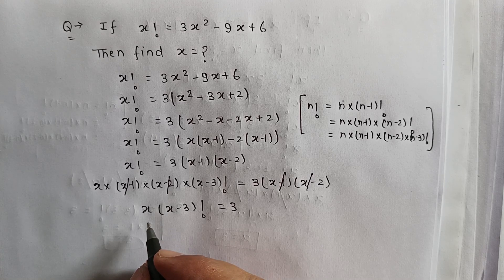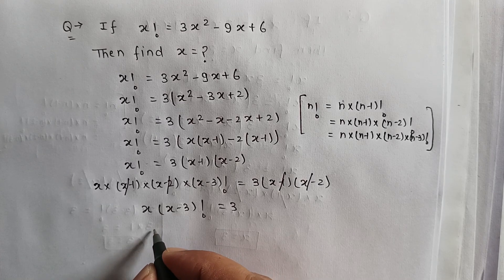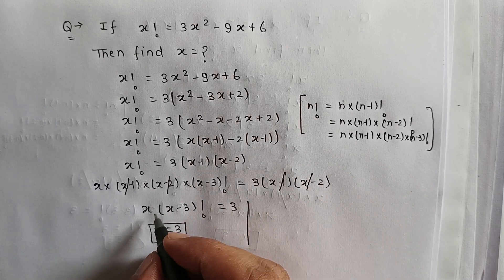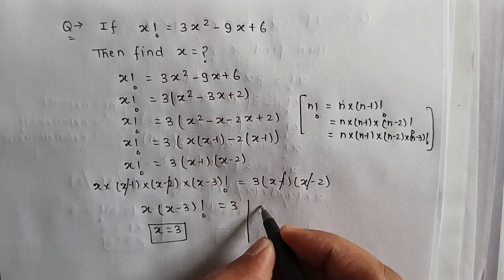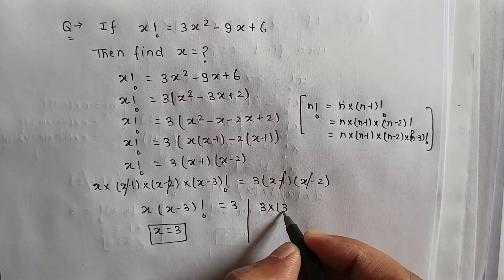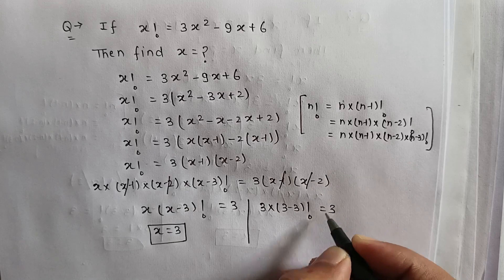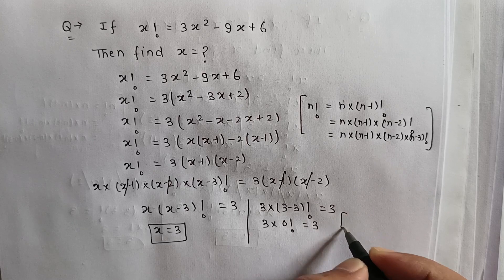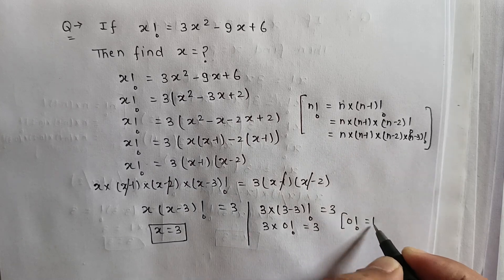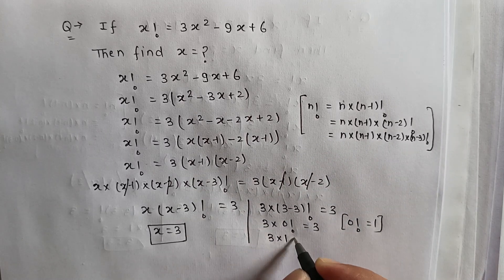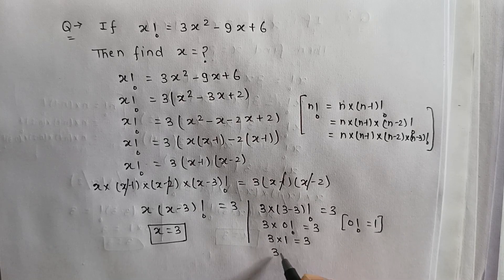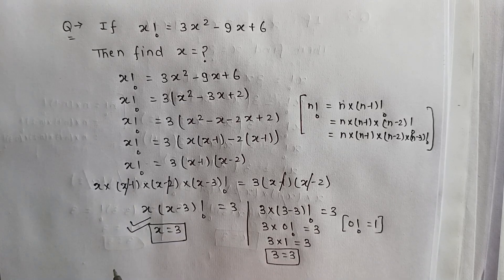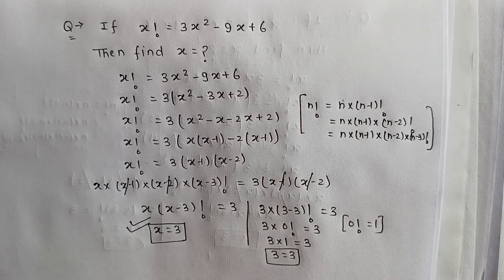We can clearly see that the value of x is 3, because substituting x equals 3 gives 3 multiplied by (3 minus 3) factorial equal to 3, which is 3 multiplied by 0 factorial equal to 3, so 3 equals 3. Therefore the answer is x equals 3.